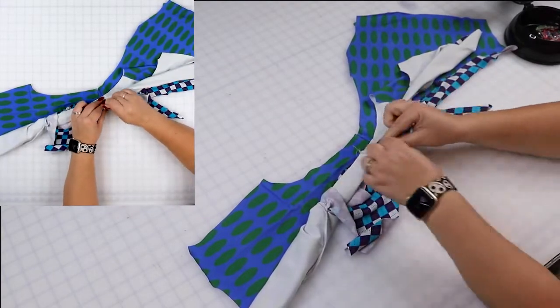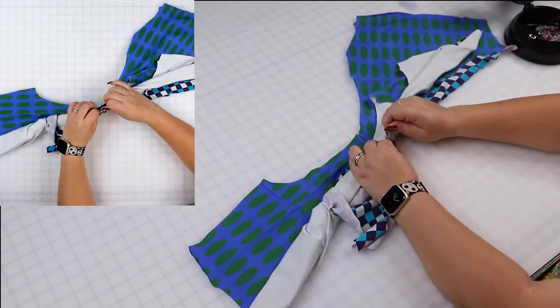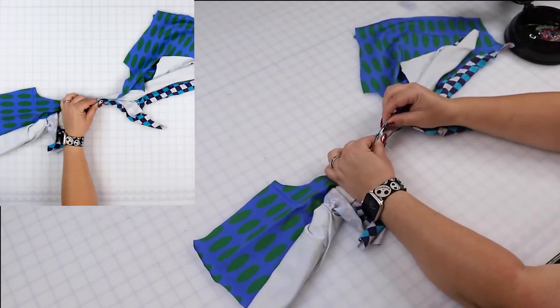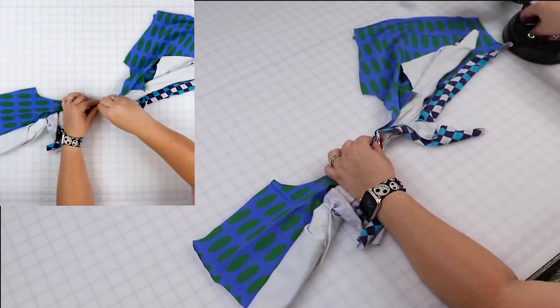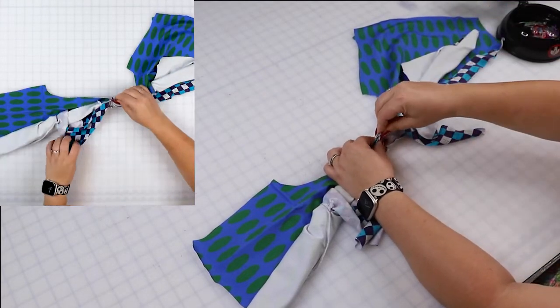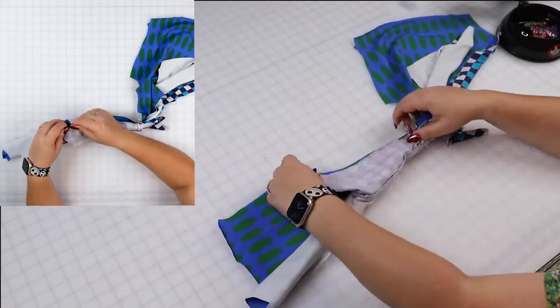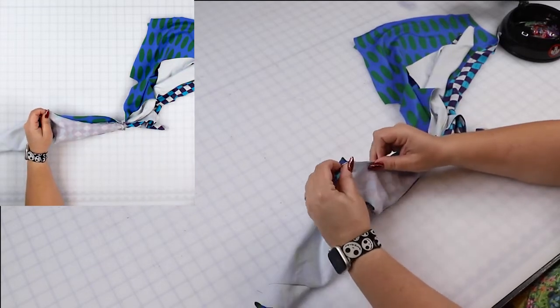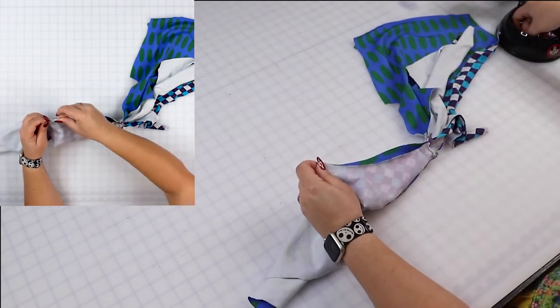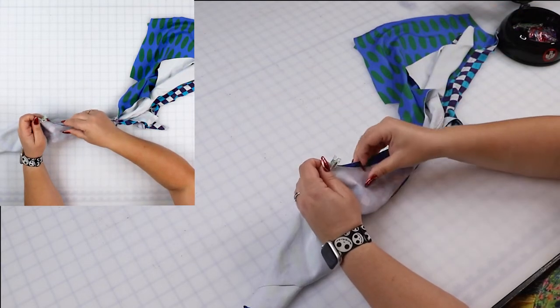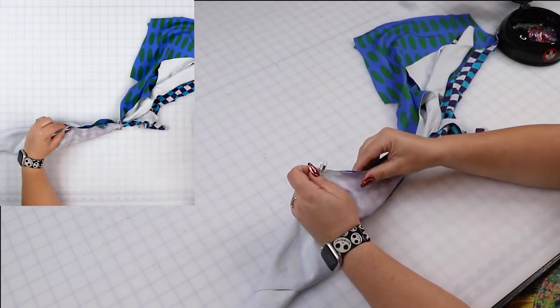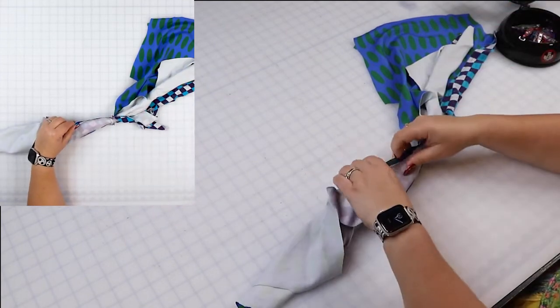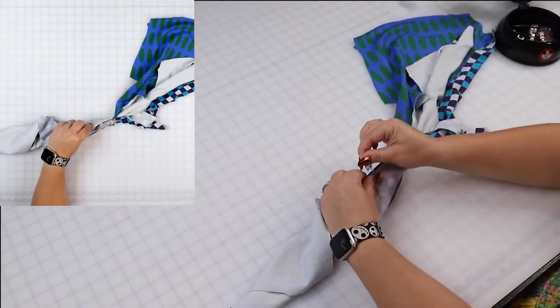So I'm going to bring my side seam, my shoulder seam from the facing and the main and pin them together like so. And then I'm going to go all the way around to the arm opening and pin this in place, making sure that I only pin the fabric of the main and the facing, nothing else. You don't catch any of that burrito in your facing.